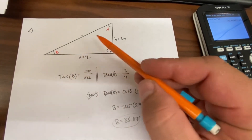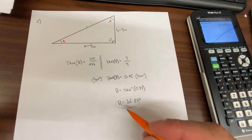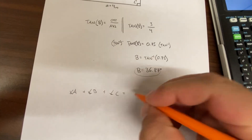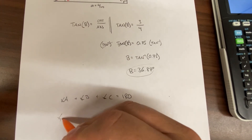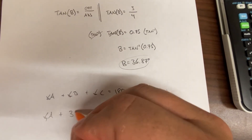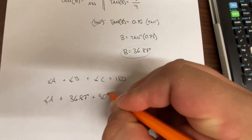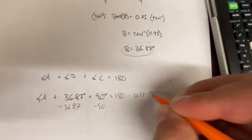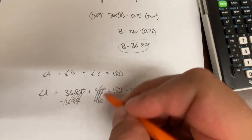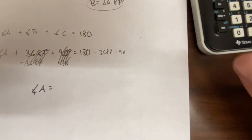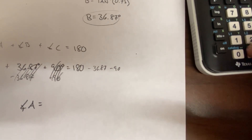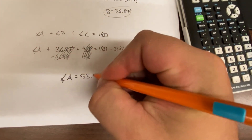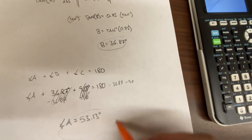The question asks us to solve for the interior angles. We know angle A plus angle B plus angle C equals 180. Angle B is 36.87 degrees and angle C is 90 degrees. Subtracting: 180 minus 36.87 minus 90 gives angle A equal to 53.13 degrees. Final answer.